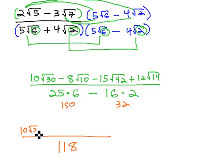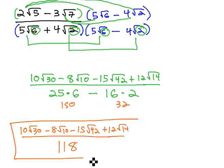With the 10 root 30 minus 8 root 10 minus 15 root 42 plus 12 root 14 in the numerator. We can only reduce if we factor first. There's no common factor, so this beast becomes our simplified rationalized denominator.